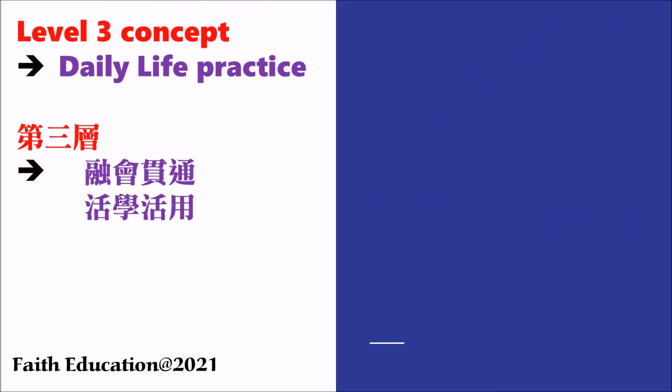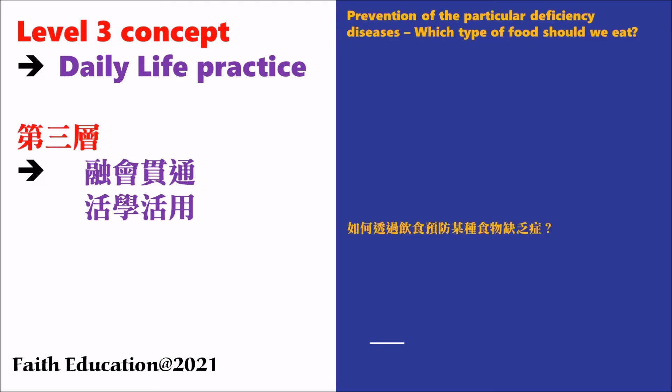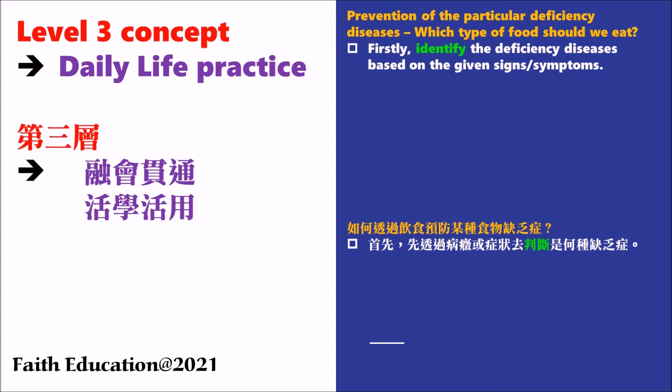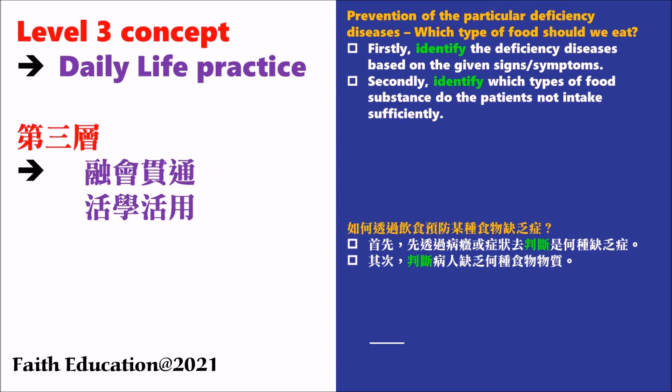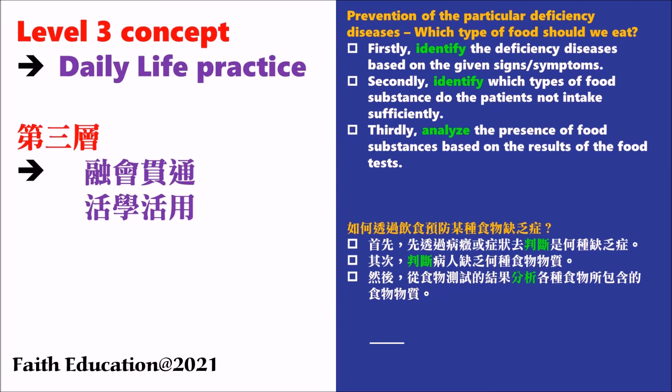The Level 3 concept is about daily life practice — applying biological knowledge to real life. For example, we may discuss which types of food to eat in order to prevent a particular deficiency disease. These questions won't only ask about the deficiency disease itself; they may relate it to the food test and combine everything together. First, you identify the deficiency disease based on the given signs or symptoms, then identify which food substance the patient is not taking sufficiently, such as vitamin C or calcium.